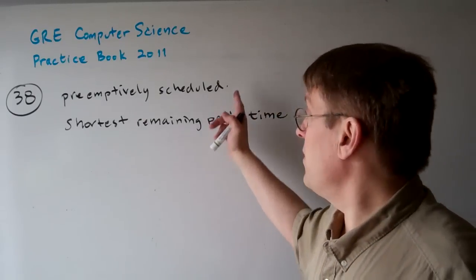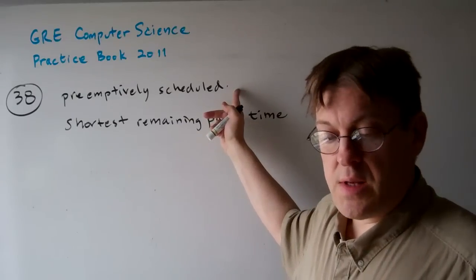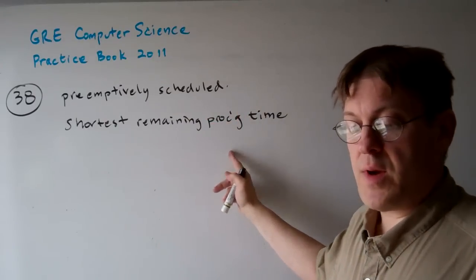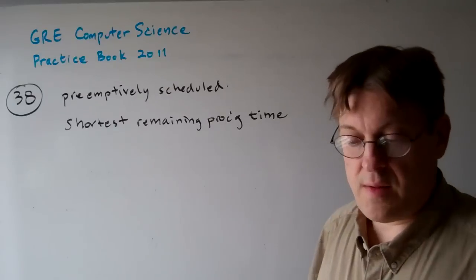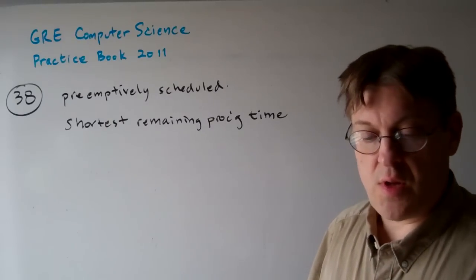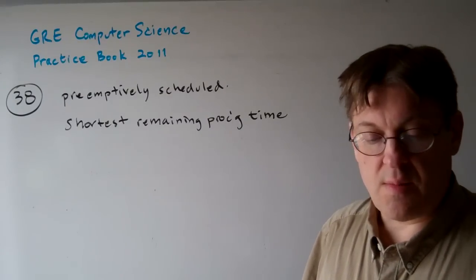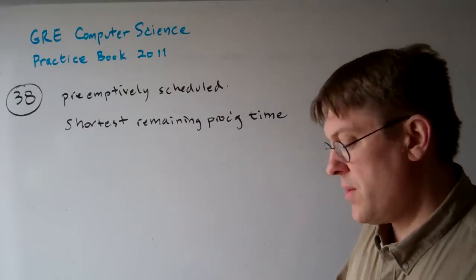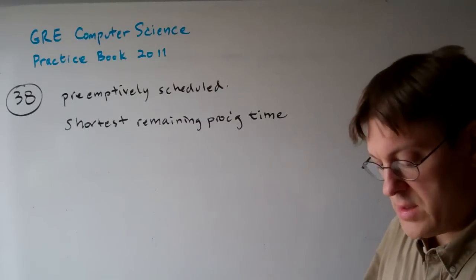These three processes are preemptively scheduled on a single CPU system with the shortest remaining processing time first scheduling policy. Which of the following shows the order in which the processes complete from first to last? Well, let's just take a look at this here.